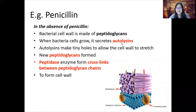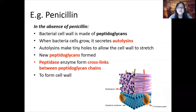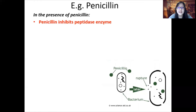It's sort of like making a hole, making it bigger, patching it up, and then making crosslinks to reinforce — like a patchwork. In the presence of penicillin, penicillin inhibits the peptidase enzyme, so it inhibits the formation of crosslinks between peptidoglycan polymers in the cell wall.